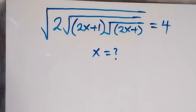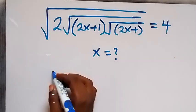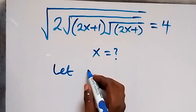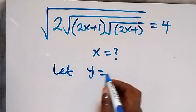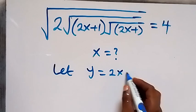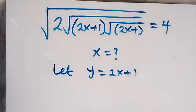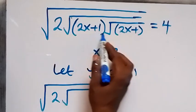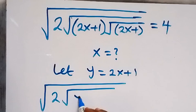Hello, you are welcome. How to solve this nice algebra equation — finding the value of x. Let's represent 2x plus 1 as y, so let y equals 2x plus 1. Then we can write this equation again, and that will be square root of 2, then inside that we have square root of 2x plus 1, which can now be written as square root of y.